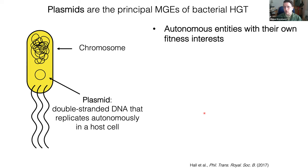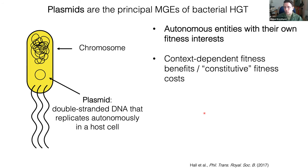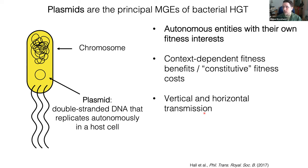Because plasmids are semi-autonomous you can have different fitness interests between the chromosome and the plasmid. We can have context-dependent fitness benefits: in a drug-containing environment an antibiotic resistance gene is beneficial, whereas there can be constitutive fitness costs of plasmid carriage that need to be outweighed. Part of why these conflicts arise is because plasmids are capable of both vertical and horizontal transmission — at least when they're mobilizable or conjugative, and I'll talk only about conjugative plasmids today.